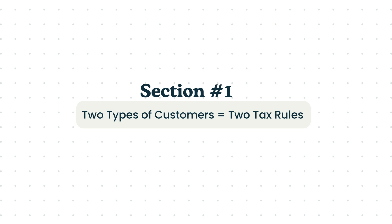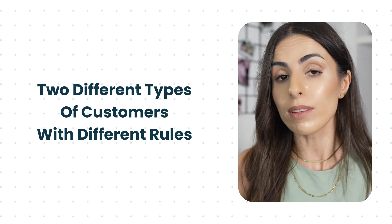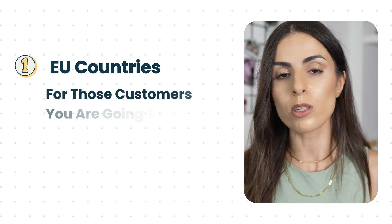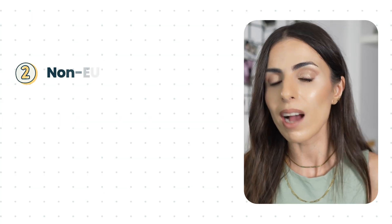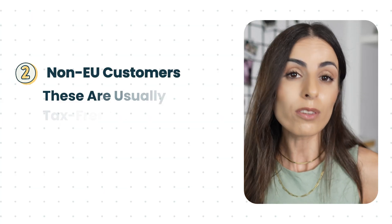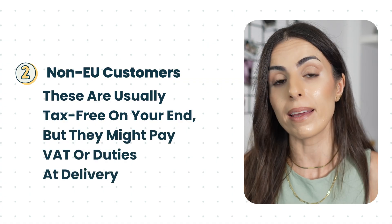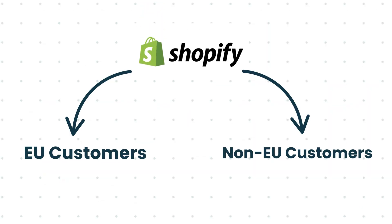Before anything, you need to be clear on who you are selling to. There are two different types of customers and each one will have different rules. First, you have EU customers, and for those customers you are going to charge VAT depending on their country's rates. Remember, we are talking about a business originally located in Europe. Next, you have international non-EU customers, and for those you won't be charging any taxes, but those customers might still pay VAT and duties when they receive their orders. Shopify handles these two types of customers differently and you need your setup to reflect this.